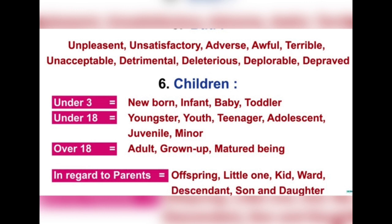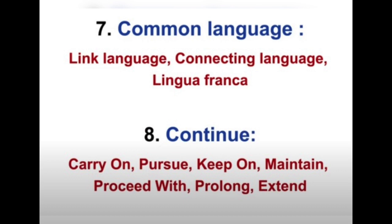For under 18 you can use: youngster, youth, teenager, adolescent, juvenile, and minor. For over 18 you can use: adult, grown-up, and matured. In regard to parents, you can use: offspring, little one, kid, ward, descendant, son, and daughter. These are the synonyms for 'children.'